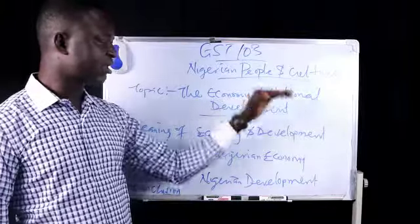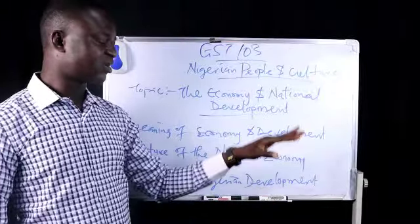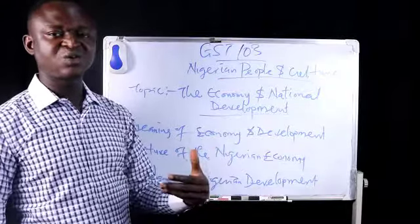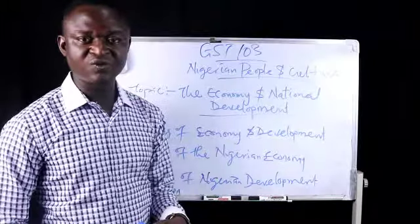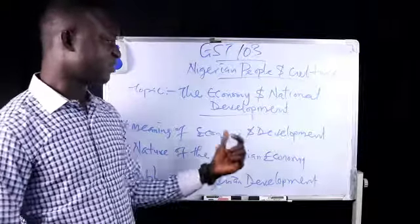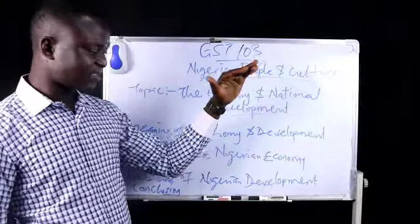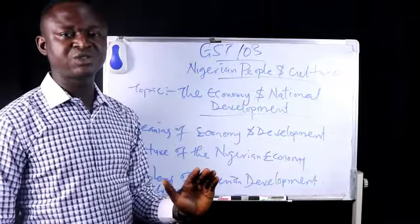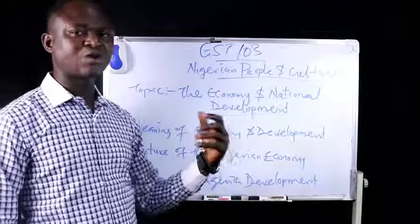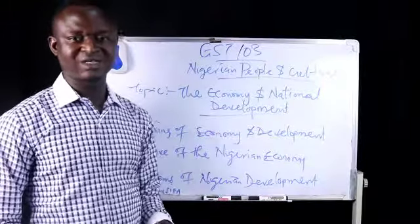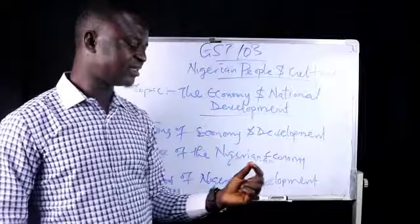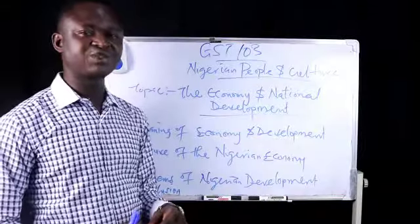We took time to examine the colonial policies, looking at how colonialism was officially introduced through the amalgamation of the Northern and Southern protectorates, including the colony of Lagos by Lord Lugard. Looking ahead, we went ahead to discuss constitution and constitutional development in Nigeria, starting from the first constitution taken into the administration of Nigeria.